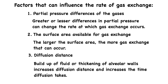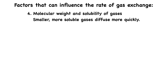Molecular weight and solubility of gases can also influence the rate of gas exchange. Smaller, more soluble gases diffuse more quickly. Carbon dioxide, for instance, is more soluble in blood than oxygen, which helps it diffuse efficiently throughout the body despite smaller partial pressure differences.